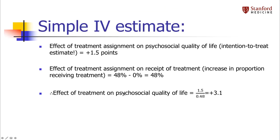Now I want to talk about the use of instrumental variable analysis when you have randomized trials with non-compliance. In that case, your instrumental variable estimate's numerator is just going to be the intention-to-treat estimate. I'll use the example of a randomized trial of integrated care versus usual care in special needs children, where the outcome was psychosocial quality of life. The numerator for your IV estimate is the effect of the instrument — treatment assignment — on the outcome, which is the same as the intention-to-treat estimate.